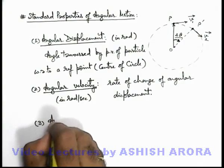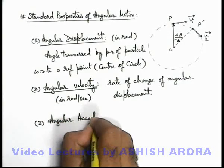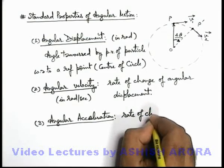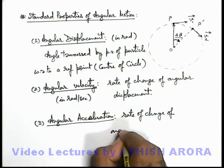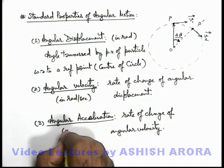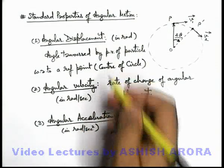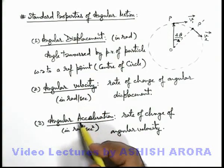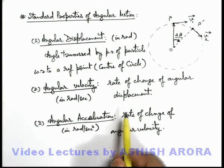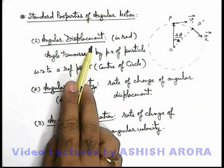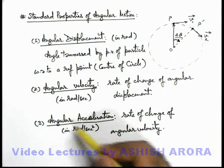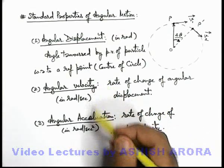Similarly, we define the third angular property: angular acceleration. Angular acceleration is defined as the rate of change of angular velocity, and it is measured in radians per second squared. You can easily analyze that these three standard angular properties — angular displacement, angular velocity, and angular acceleration — are related in the same manner as the linear properties. Acceleration is the rate of change of velocity; velocity is the rate of change of displacement. Here, angular displacement is the angle covered by the particle in a given time, angular velocity is the rate at which the angle is changing, and angular acceleration is the rate at which angular velocity is changing. These are all vector quantities.